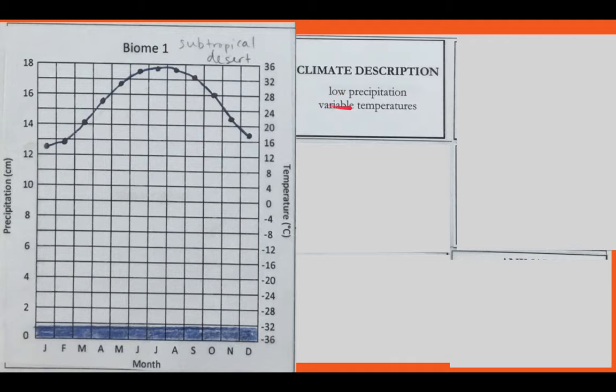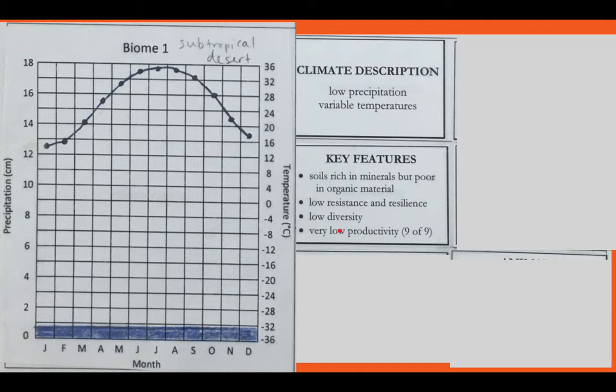So it makes sense that the climate of the desert has low precipitation. Temperatures do vary. Hot summers, pretty cool winters. The key features, you would expect very low productivity. That's where that nine of nine is. These are the regions of the world that have no or very little plant life, no diversity, poor organic material.